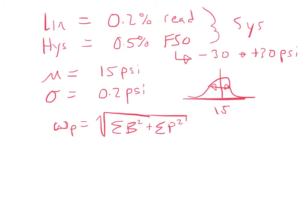So, now what we need to do is combine these. So, our first two systematic errors, or bias errors, are going to be first 0.2% of our reading. So, we can take 0.002 times our reading, which was 15 psi squared.